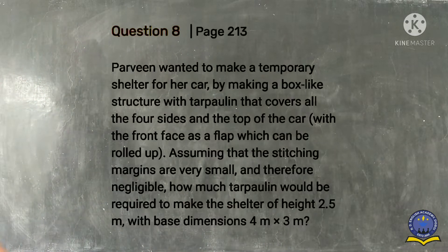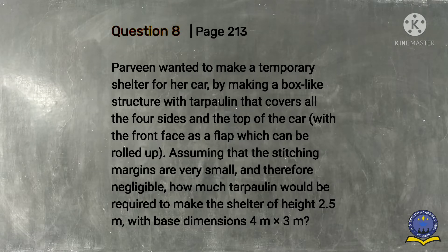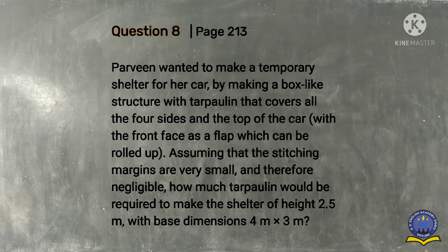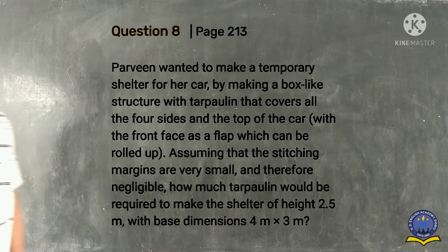Question number eight is: Parvin wanted to make a temporary shelter for her car by making a box-like structure with tarpaulin. Tarpaulin means a windproof or waterproof cloth that covers all four sides and the top of the car, with the front free as a flap which can be rolled up. Assuming that the stitching margins are very small and therefore negligible, how much tarpaulin would be required to make the shelter?